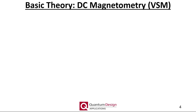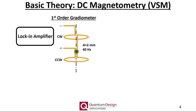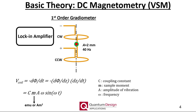Before discussing an AC susceptibility measurement, let's quickly review DC magnetometry using the Vibrating Sample Magnetometer, or VSM. For a VSM measurement, the sample vibrates within a first-order gradiometer and the induced voltage is measured using a lock-in amplifier. The magnitude of the in-phase component of the induced voltage is then, via calibration constants, used to determine the DC magnetic moment.